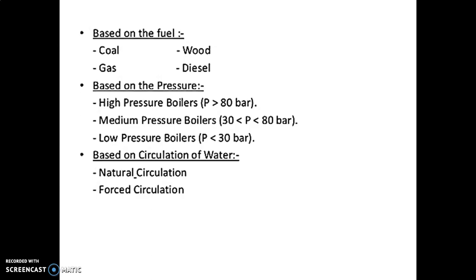The next classification is based on pressure: high pressure boiler, medium pressure boiler, and low pressure boiler. In case of the high pressure boiler, pressure is more than 80 bar. In the medium pressure boiler, the pressure range is between 30 to 80 bar. In case of the low pressure boiler, the pressure range is below 30 bar. Keep in mind that the water tube boiler is considered a high pressure boiler. The last classification is based on the circulation of water — it may be natural circulation or forced circulation.